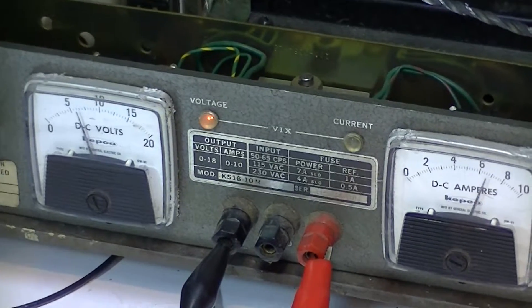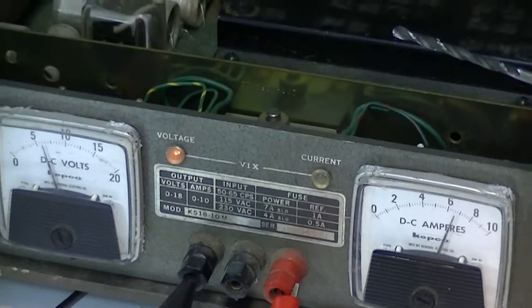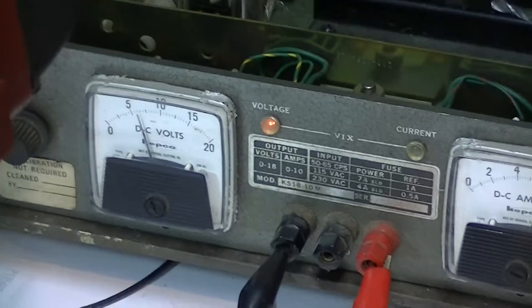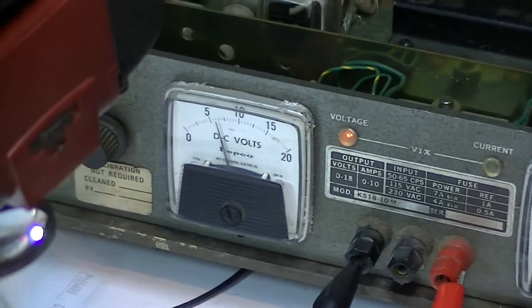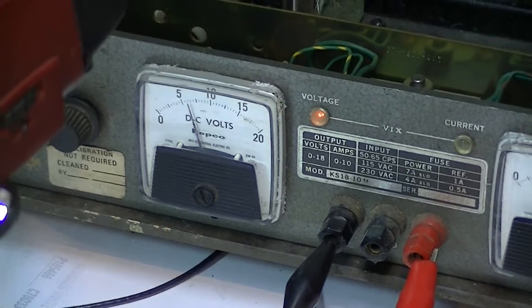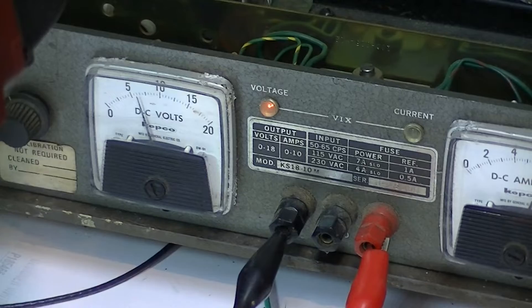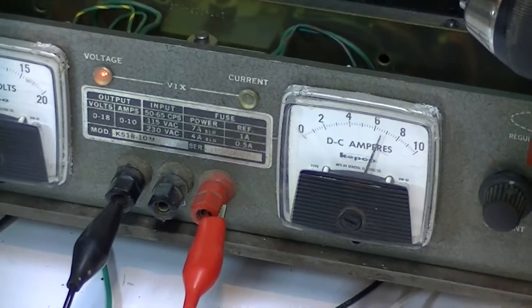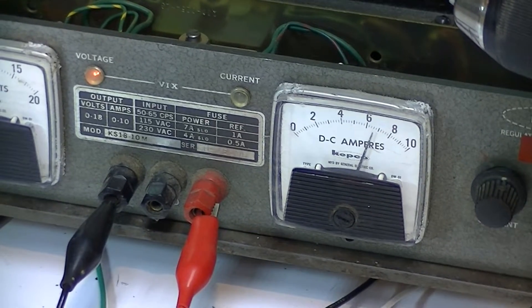The electronic load is being driven by this power supply. The voltmeter is just about 5 volts and it's in the constant voltage mode. That's that little amber light. The amp meter reads just around 7 amps.